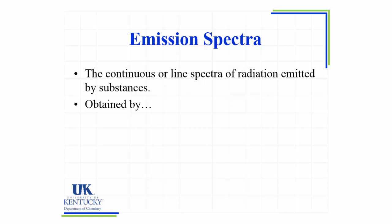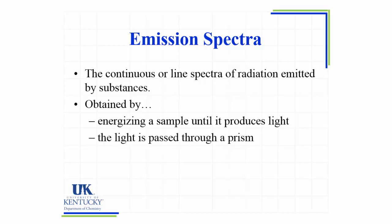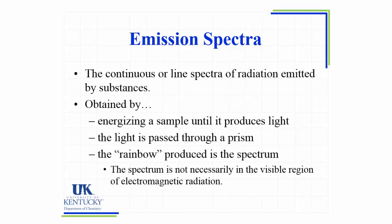Now the way you obtain this emission spectra is to energize the sample until it produces light. So you might heat it, you might pass electrical current through it, but eventually it will glow and produce light. That light that's produced is passed through a prism. That rainbow that is produced is the spectrum. And you'll have some way of visually seeing that or electronically seeing that.